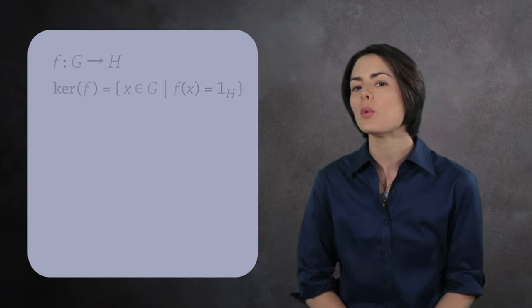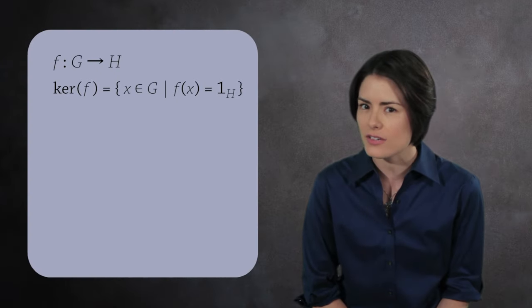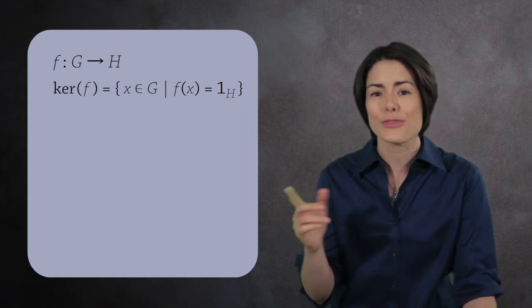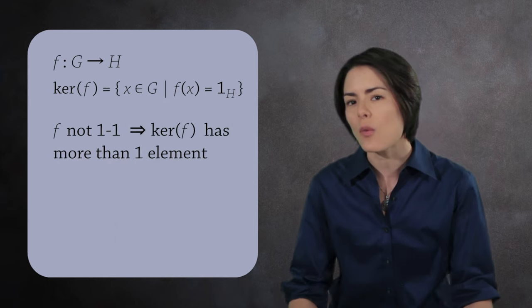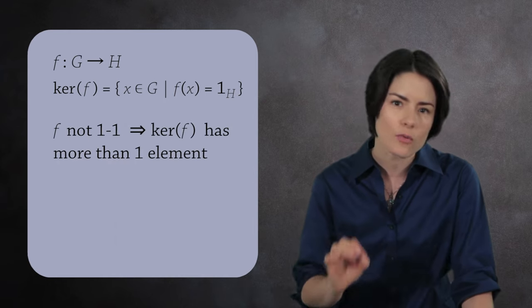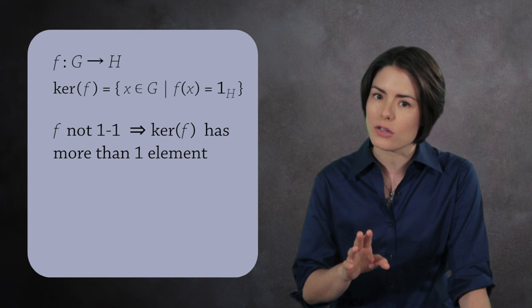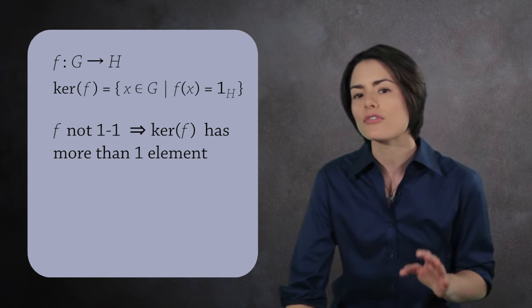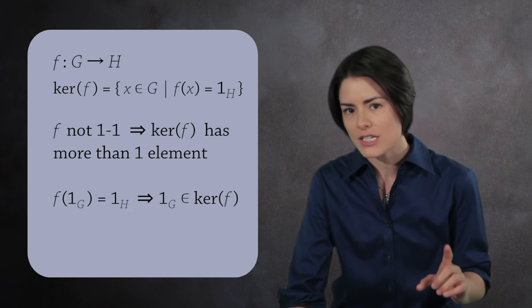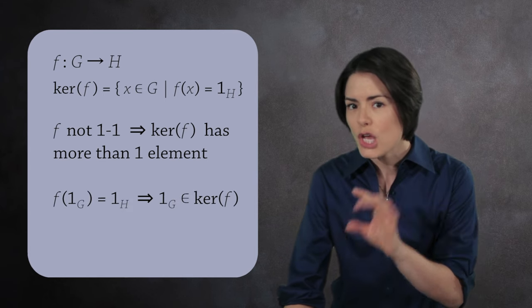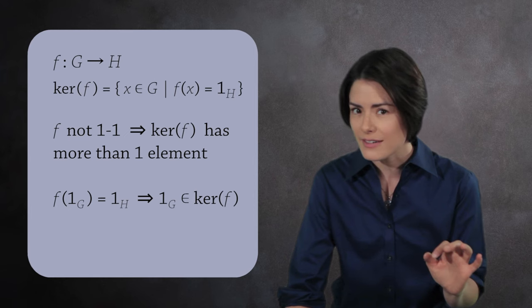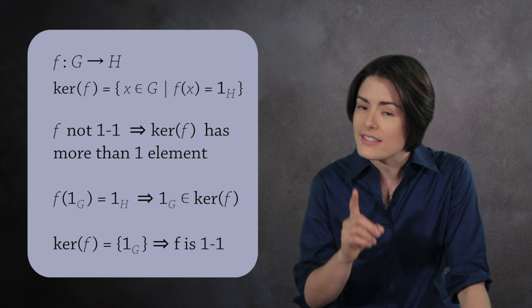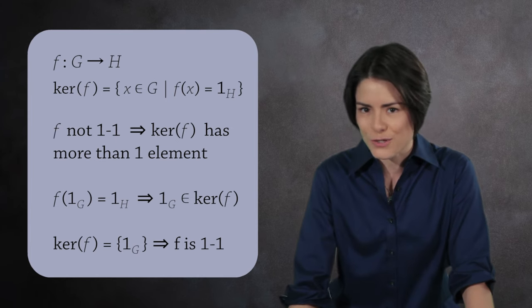If I told you a homomorphism f was not an injection, it's not obvious that there would be more than one element that maps to the identity element. But there are. If f is not one to one, then the kernel contains more than one element. Think of the kernel as a way to measure the degree to which f fails to be one to one. We know for every homomorphism the identity in G maps to the identity in H, so the kernel is never empty. It always contains the identity one sub G. And if the kernel only contains the identity, then f is one to one.